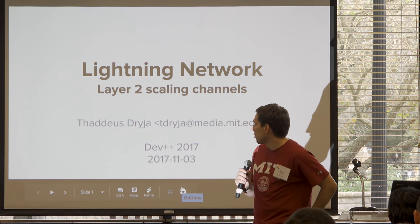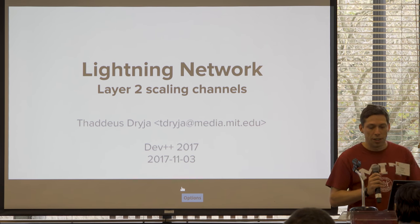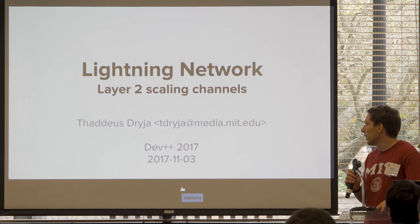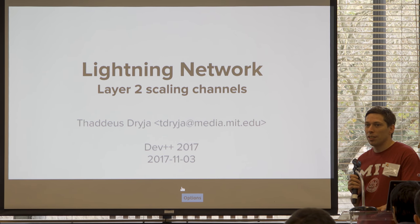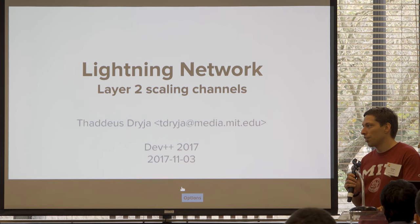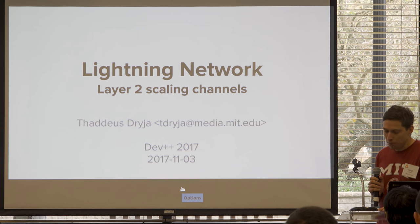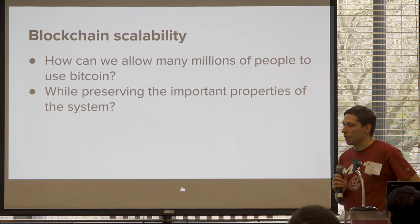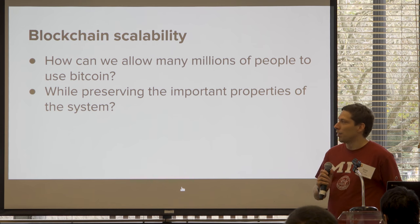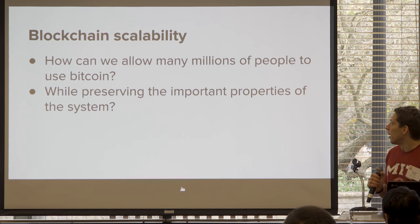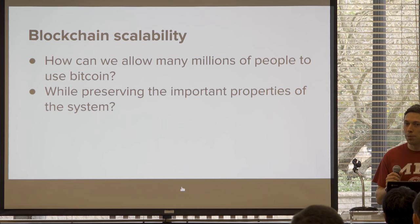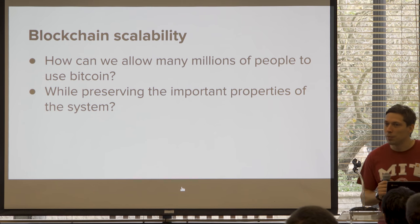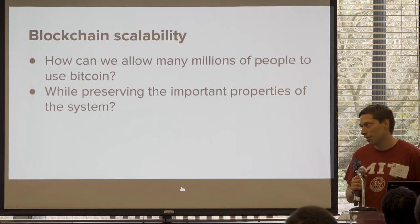I'll start with the first one, the Lightning Network, which is kind of old at this point. This was a paper I wrote with Joseph Poon about two years ago, and there's a bunch of people working on software for it. The main idea is how can we scale the blockchain, which is one of the old problems with Bitcoin. We want to allow millions and millions — maybe billions — of people to use this, and we need to preserve the important properties of the system: everyone needs to be able to verify things.